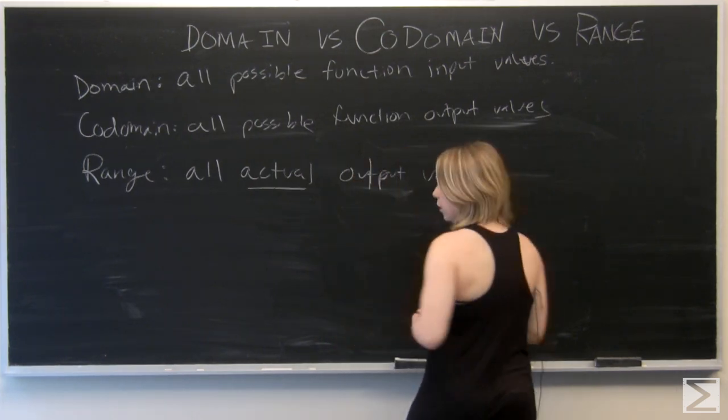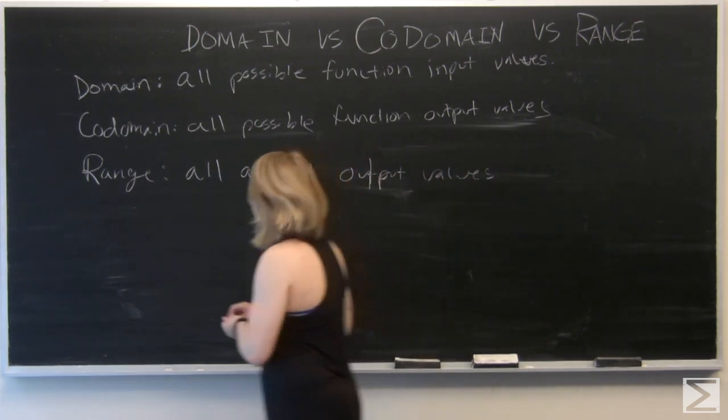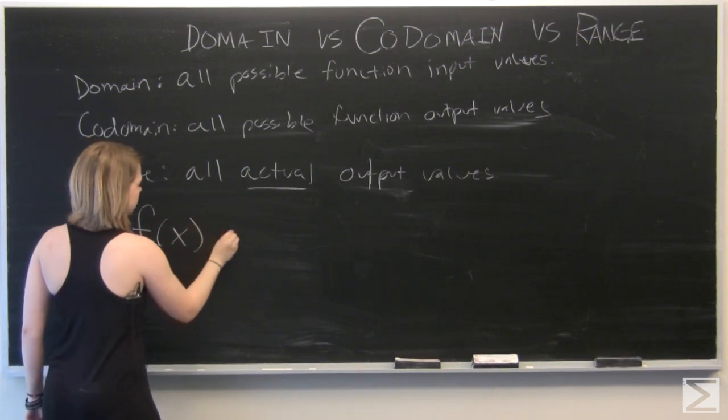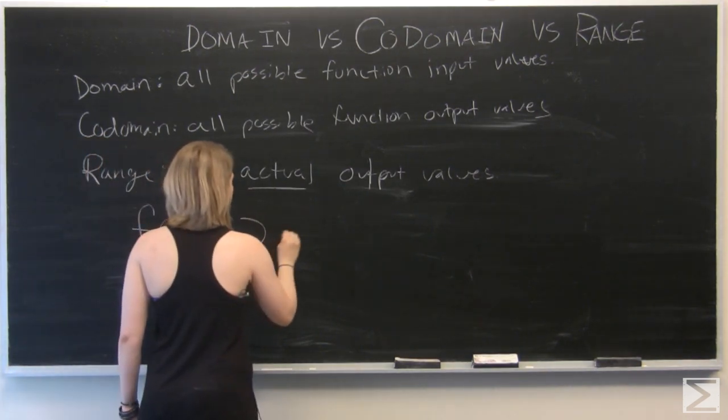So let's start with an example. So we've got a function here. So f of x is equal to 2x.